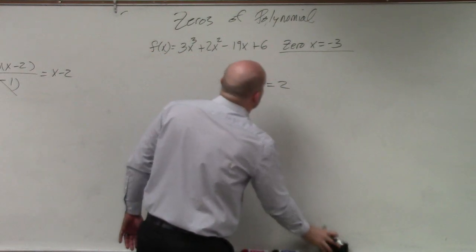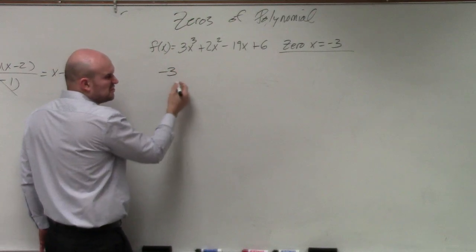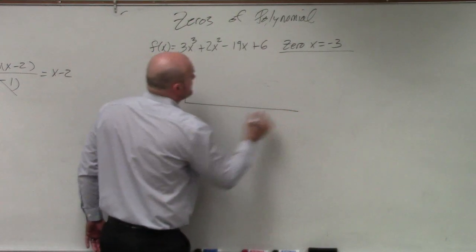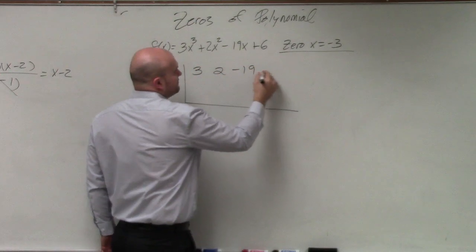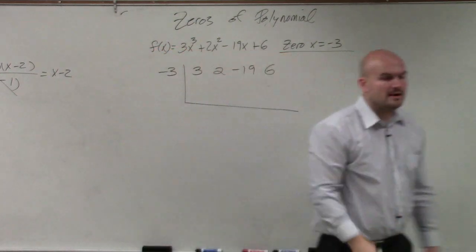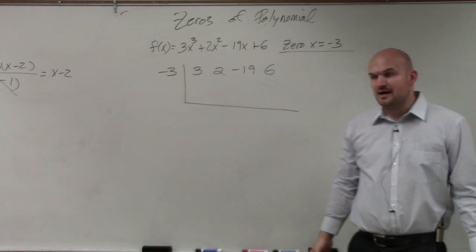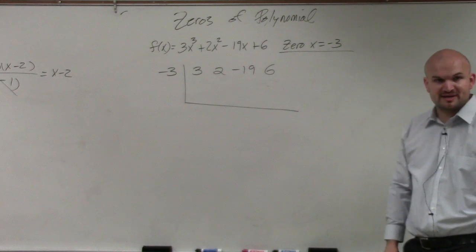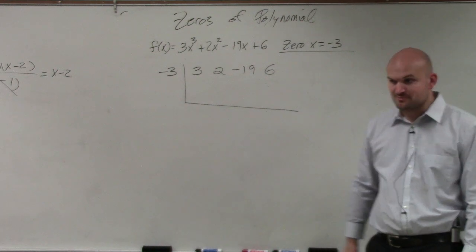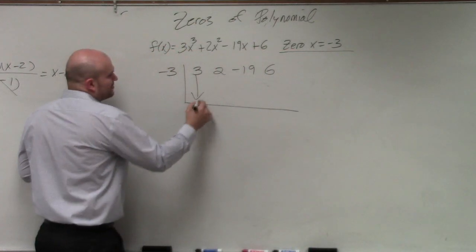So what we're going to do is we're going to use synthetic division. You could use long division, but why? Synthetic division, 3, 2, negative 19, and 6. Alright, I'm not going to talk my way through it as much as I did last class period, but I go as low as synthetic division because nobody asked me for questions on their homework, so that I assume that everybody did it and didn't have any issues. So the first thing you're going to do, bring down 3.